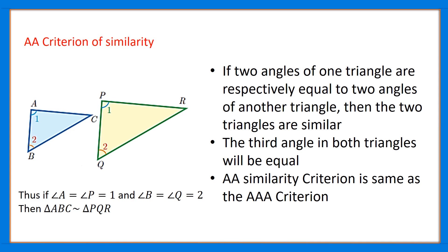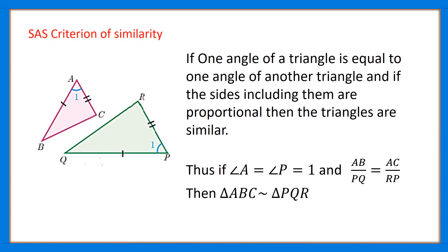The next criterion of similarity is the SAS criterion. It tells us that if one angle of a triangle is equal to one angle of another triangle, and the sides including that angle are proportional, then the triangles are similar. That is, for triangles ABC and PQR, if angle A equals angle P, and AB/PQ equals AC/RP, then the two triangles are similar.